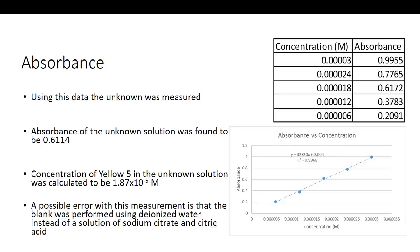We have our equation for our line giving us the relationship between absorbance and concentration in the form y = mx + b. Once we had that, we measured the unknown suspect solution and found the absorbance to be around 0.6. When we substituted that in for our y-value in our equation, we calculated the concentration of yellow 5 in the solution to be about 1.87 × 10⁻⁵ molar.